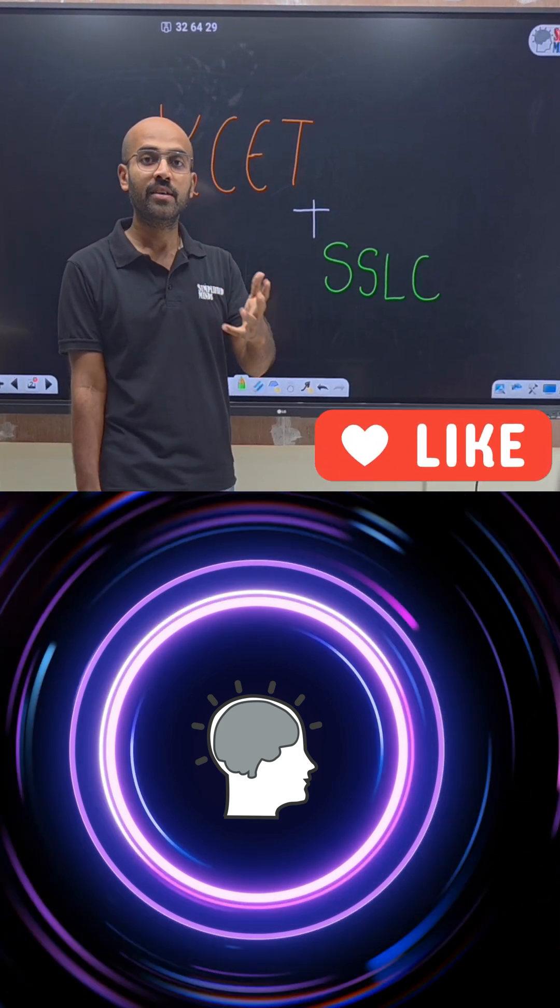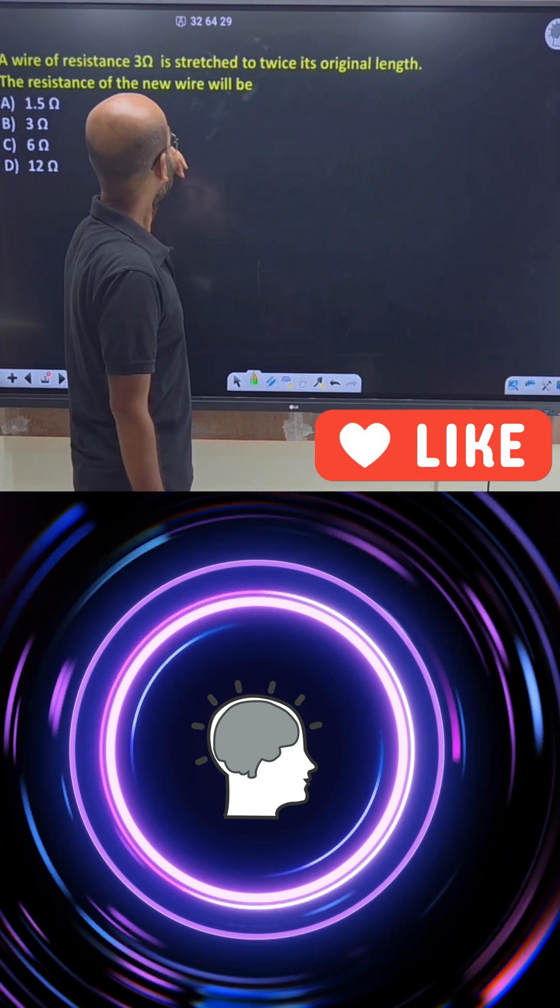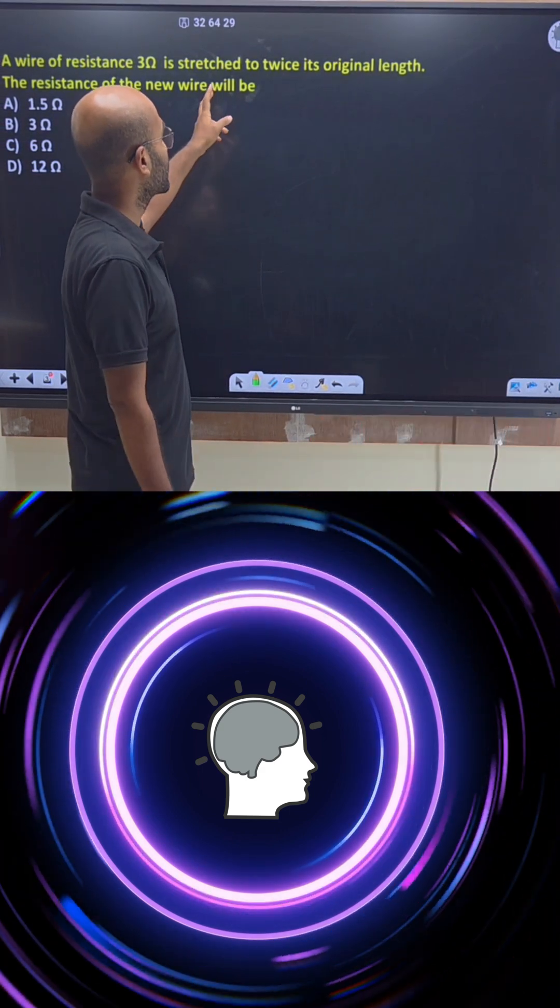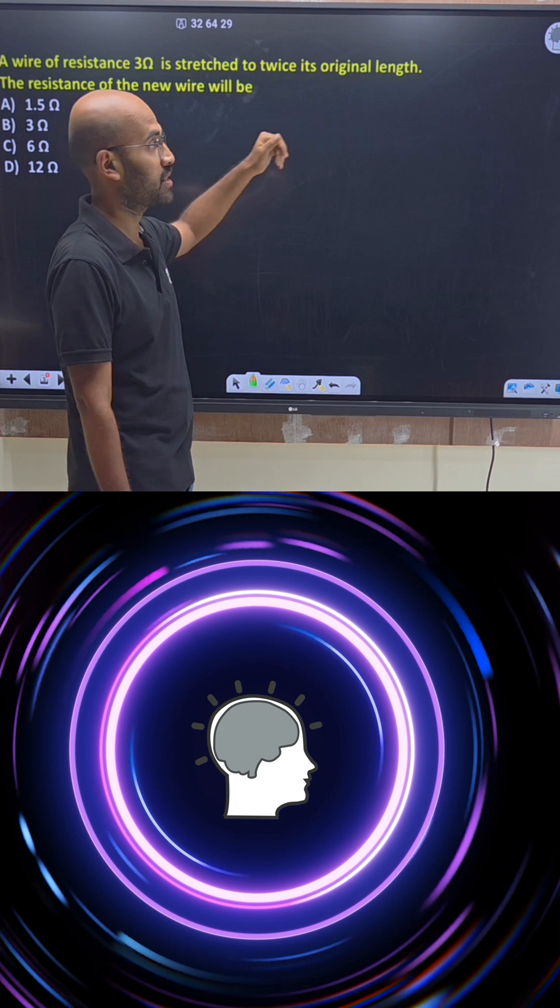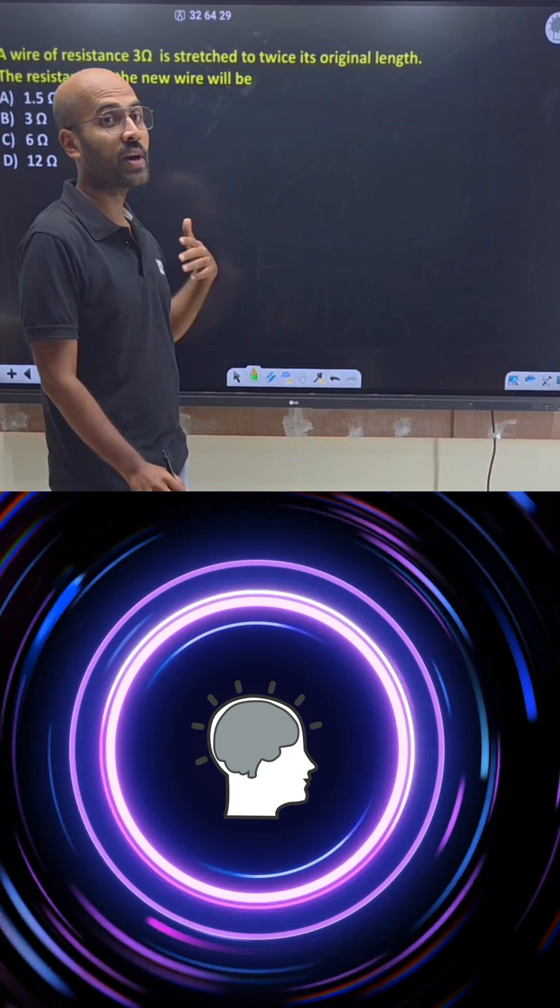KCET is a shortcut. Tricks. Tell me. Wire of resistance 3 ohm. It is stretched to twice its original length. So the wire is stretched. The resistance of the new wire will be.